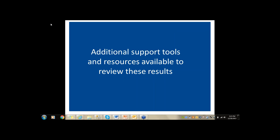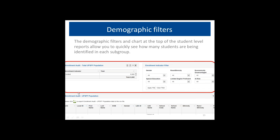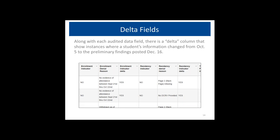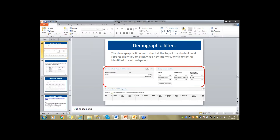Now I'm going to review some of the additional support tools and resources available to review the results. First are the demographic filters. In the student level report, at the top of each view, there are filters where you can select drop-down menus to see how many students are being counted for each population. Based on the subgroup you select, that will change the counts you see in the chart to the left. Let me show you what that looks like.